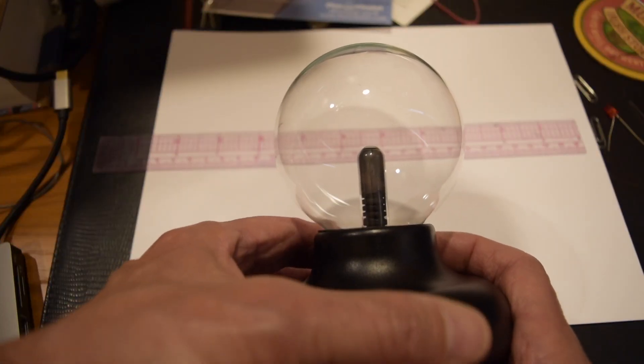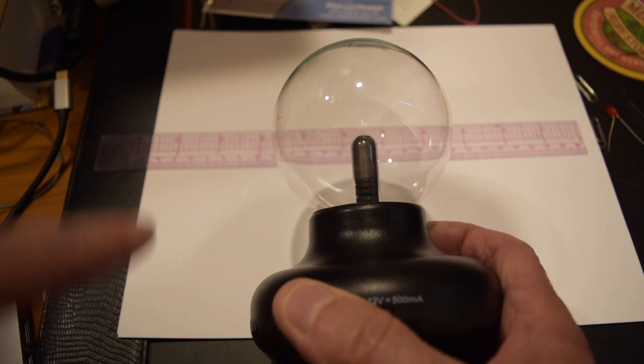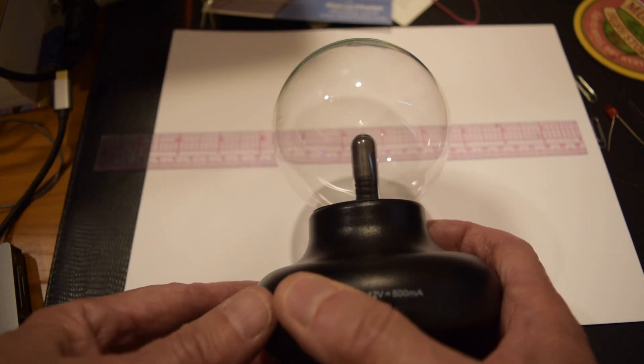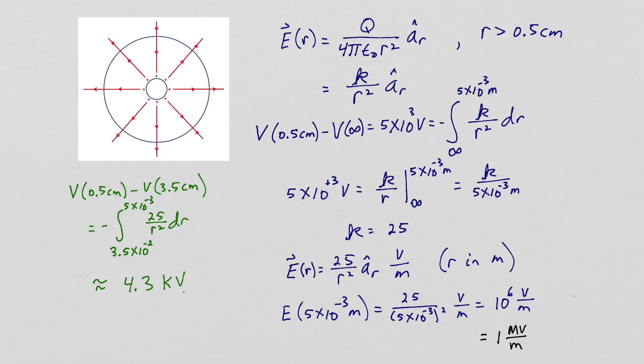The outer globe is about seven centimeters in diameter and the region inside of the Tesla coil is about a centimeter across. Our plasma globe consists of our Tesla coil of approximately half a centimeter radius and the globe with the radius of about 3.5 centimeters.